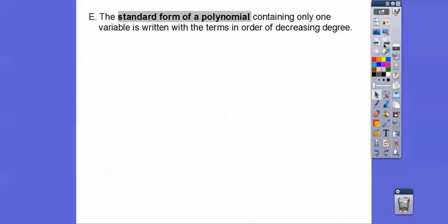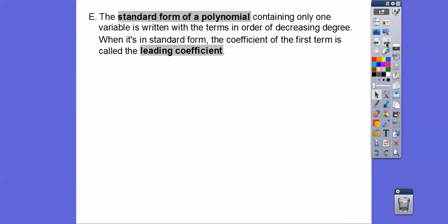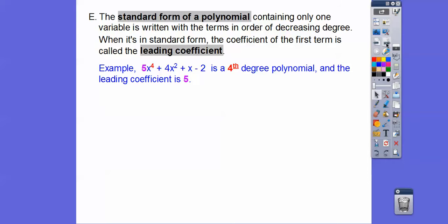Standard form of a polynomial: it has to have one variable only, and it's written in decreasing degrees — we call it descending order. When it's in standard form and written in descending order, the coefficient of the first term is called the leading coefficient. Here's a polynomial written in standard form: the highest power, then the next highest, then the next, and the constant is always at the end. It's a fourth degree polynomial, and the leading coefficient is that five.